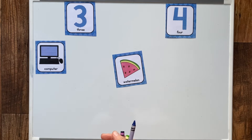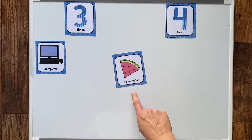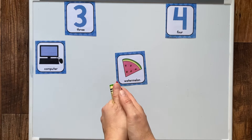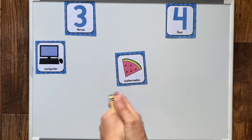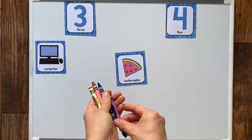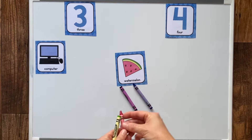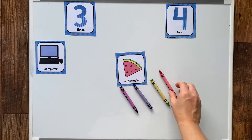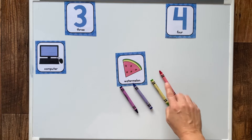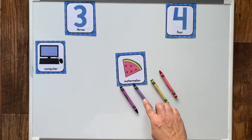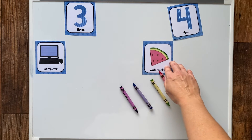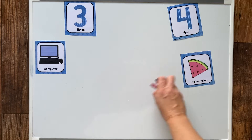Yummy, yummy watermelon! Say watermelon. Watermelon. Let's clap it. Watermelon. Let's lay down our crayons. Wa-ter-mel-on. I see two and two — well, two and two is four. I see four crayons, four syllables. Watermelon goes over here with the number four.